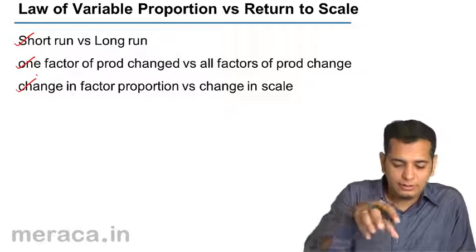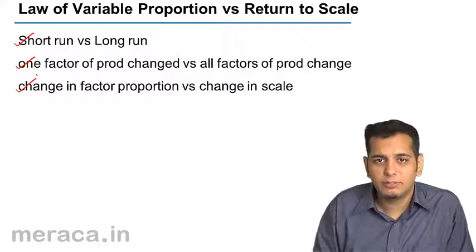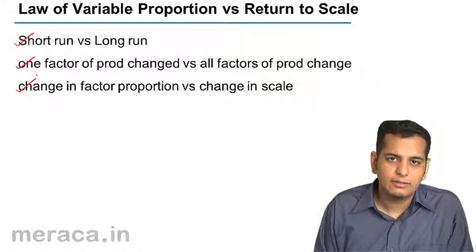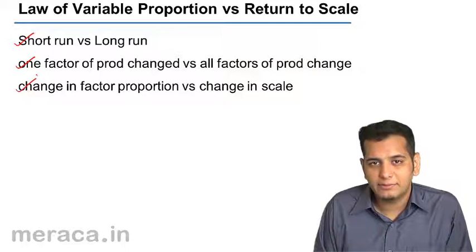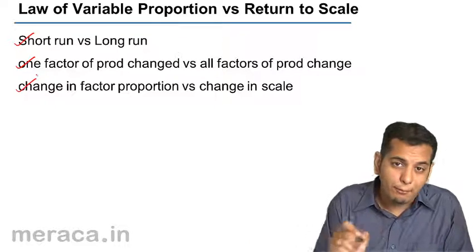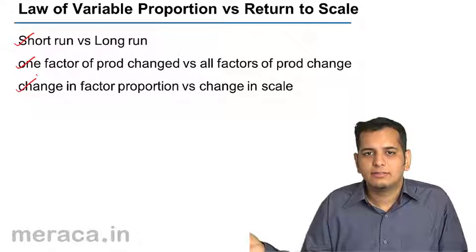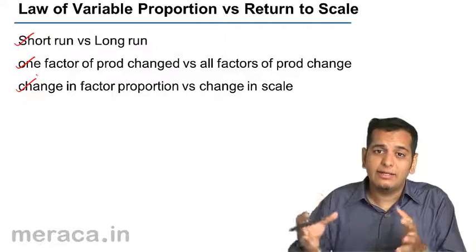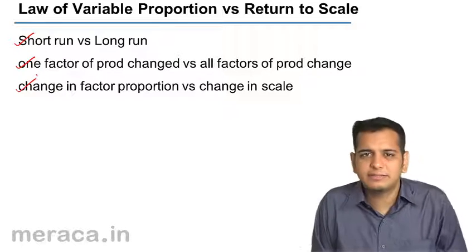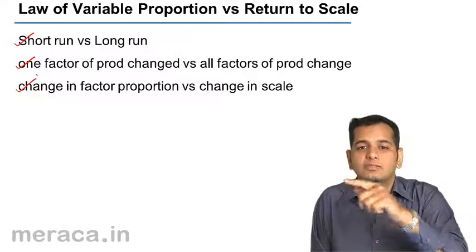However, when we come to the law of returns to scale, all the factors can be changed together. All the factors are increased or decreased at the same time, so the proportion amongst the factors employed remains the same. What changes is the scale — a change in scale means an increase or decrease in all the factors together. The scale of inputs is changing, but the proportion amongst them remains the same.